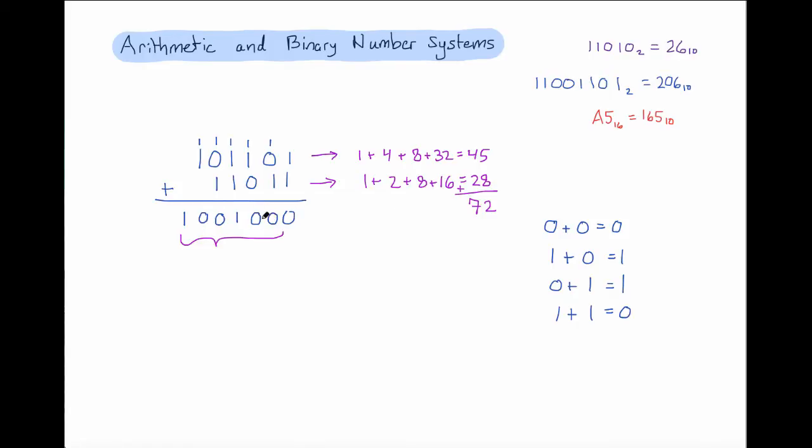So all we need to do to check our work is see whether or not our number here is 72. And so we have no copies of 1, no copies of 2, no copies of 4, we have a single copy of 8, no copies of 16, no copies of 32, and one copy of 64, giving us exactly what we hoped. So we see that our bitwise addition, done very similarly to how we would perform addition in decimal, works just fine.